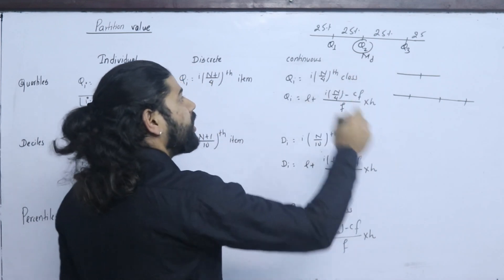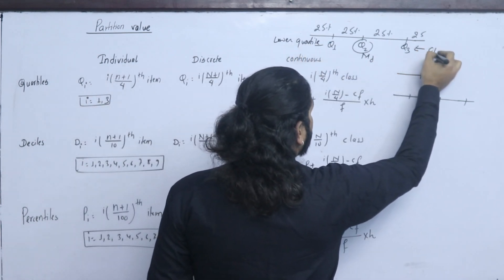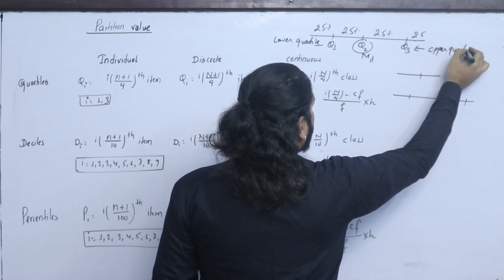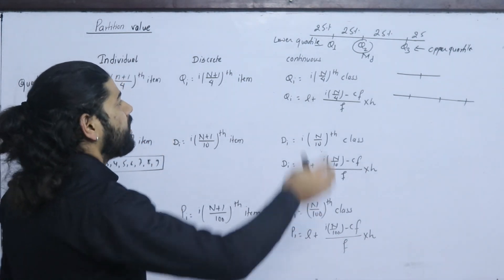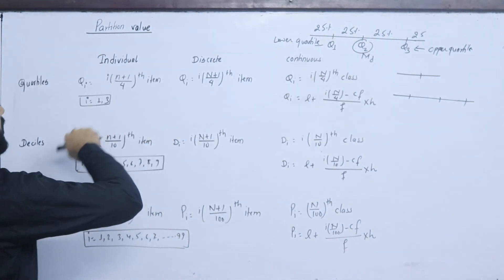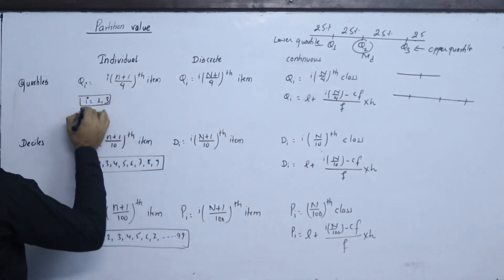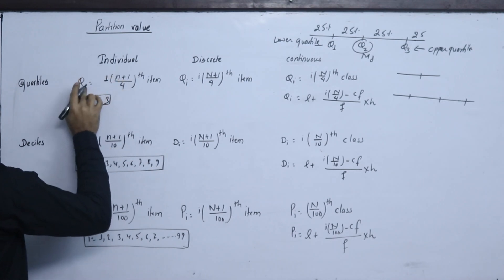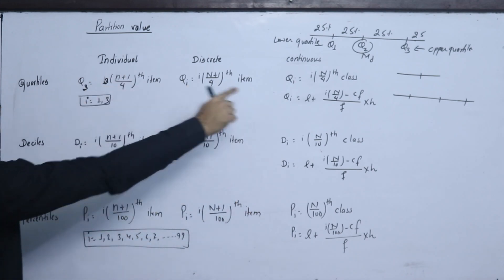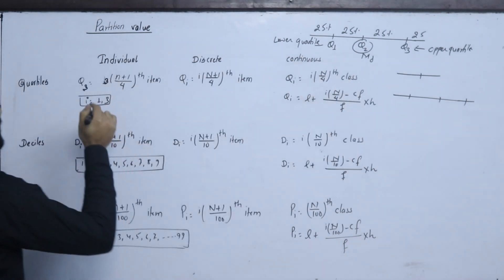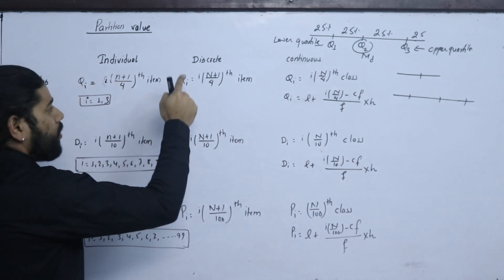The lower quartile is Q1, Q2 is the median, and the upper quartile is Q3. Q2 and the median are the same. Q1 is the first (lower) quartile and Q3 is the upper (third) quartile. For the individual series, the formula is Q_i = i(n+1)/4, where i=1 gives Q1 and i=3 gives Q3.